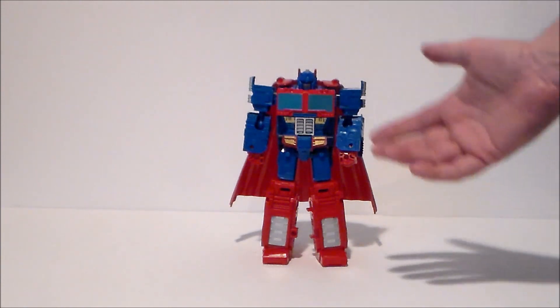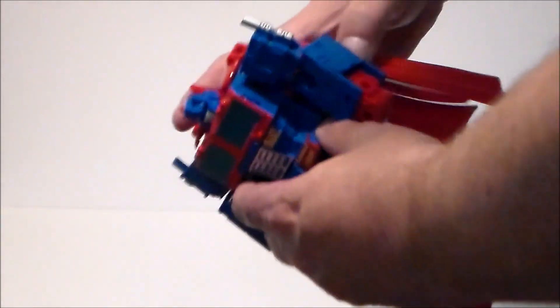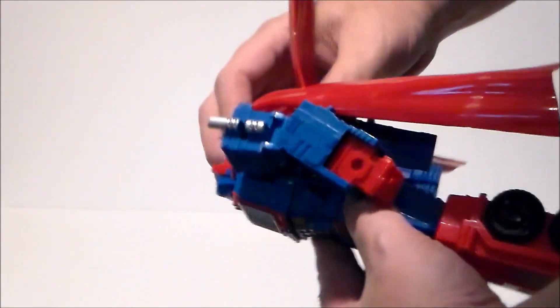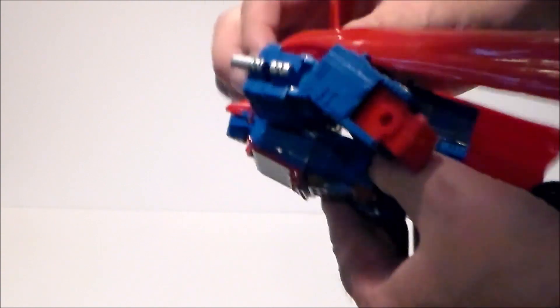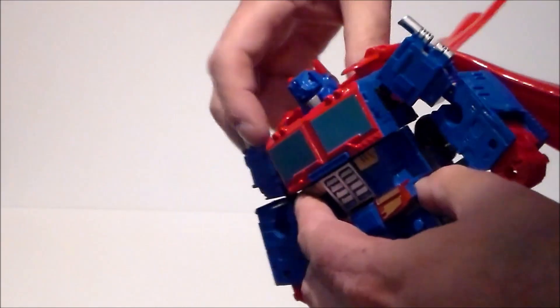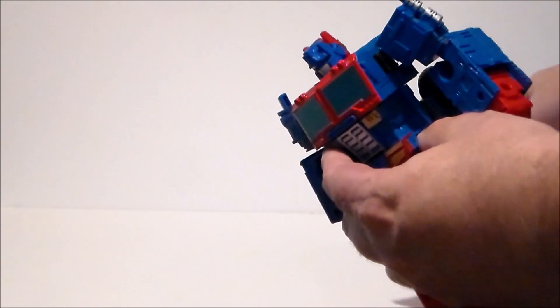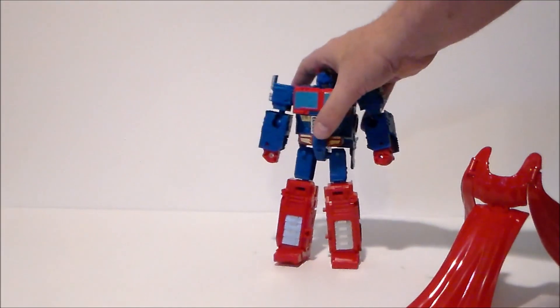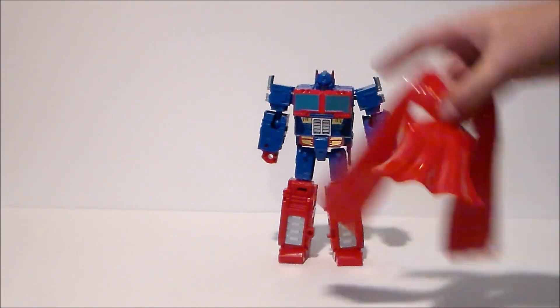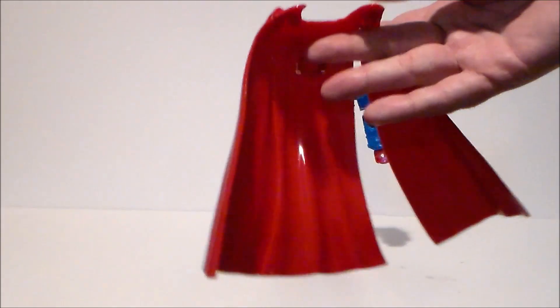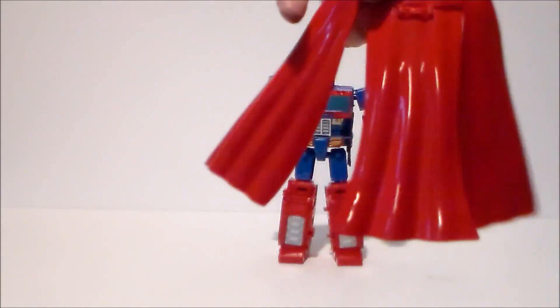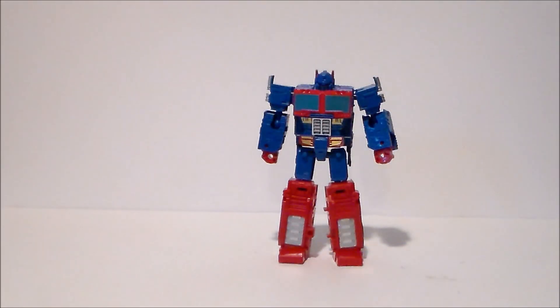Now transformation on this figure is basically going to be the same as the Core Class Prime. The first thing that we want to do is take this cape off, so you're just going to lift it up off the shoulders and just kind of lift it up like this, clip it off the pegs, and we're going to put that to the side right over here. Yeah, just clips in the shoulders, nothing too fancy.